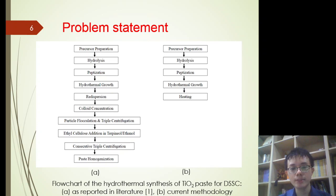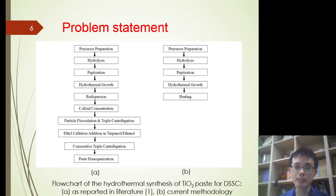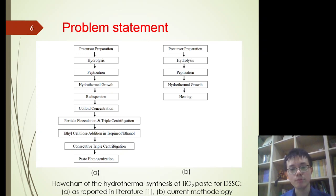In the current research, it was discovered that the titanium dioxide paste can be obtained simply by heating the resultant mixture after the hydrothermal treatment, which can simplify the whole DSSC processing significantly. By using this re-invented and simplified methodology, the DSSC with promising photovoltaic performance was fabricated, which will be discussed in the following section.